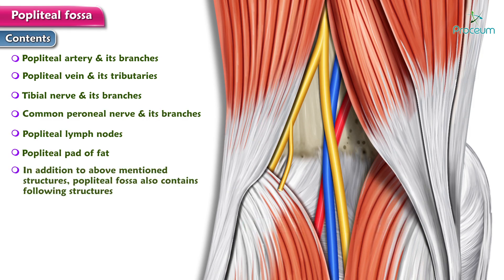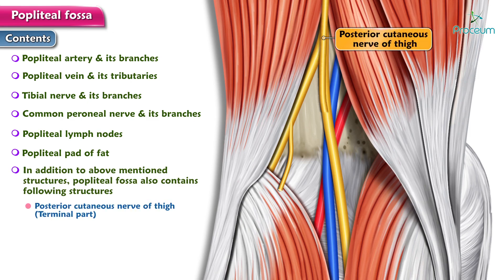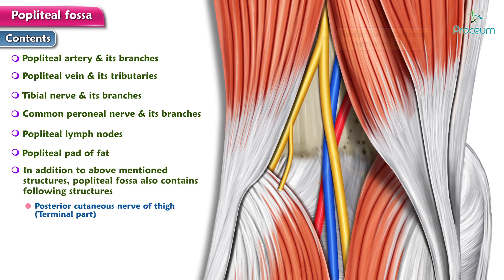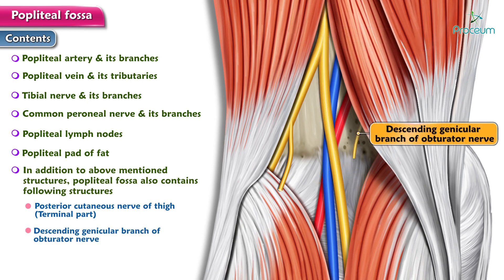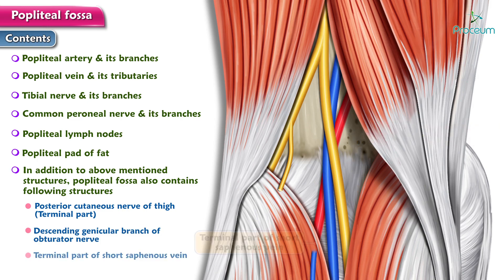In addition to these structures, the popliteal fascia also contains the terminal portion of the posterior cutaneous nerve of the thigh, the descending genicular branch of the obturator nerve, and the terminal part of the short saphenous vein.